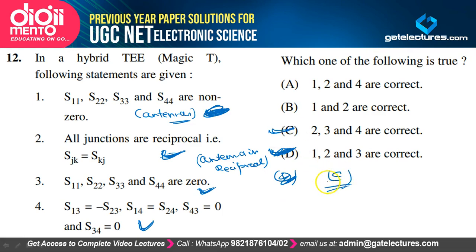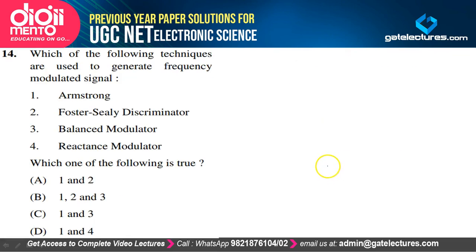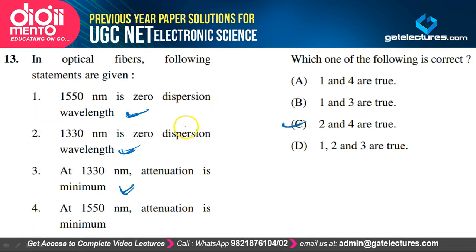For optical fibers: 1550 nm is not the zero-dispersion wavelength — that statement is wrong. 1330 nm is a zero-dispersion wavelength — that is true. At 1550 nm, attenuation is minimum — that is also true. So only statements 2 and 4 are correct, and option C is the correct option.